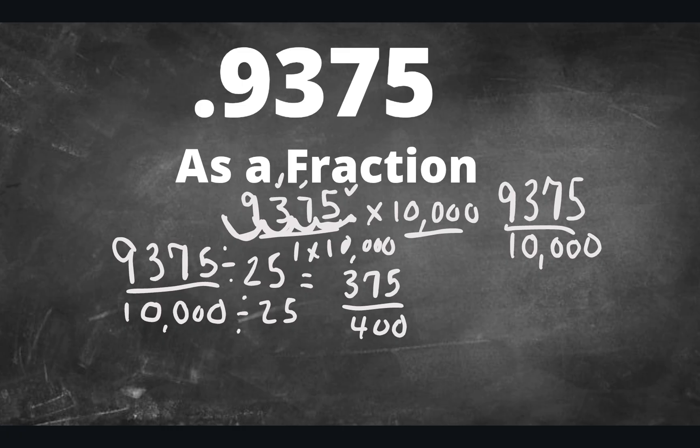Now let's simplify again. I think we can divide it by 25 once again, and we're going to do it to both the numerator and the denominator. 375 divided by 25 is 15. 400 divided by 25 is 16. So 9,375 over 10,000 equals 15/16 as a fraction. I hope that was helpful.